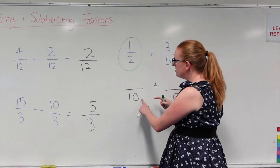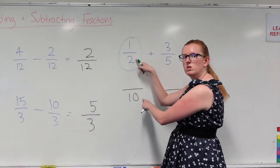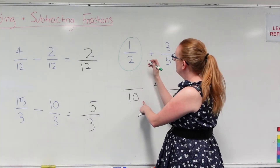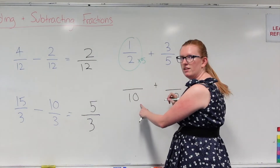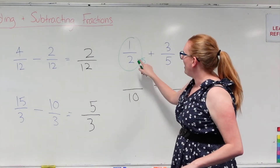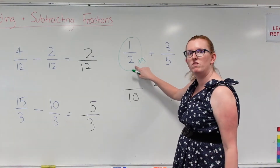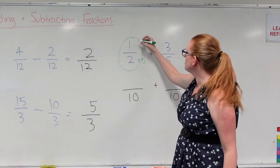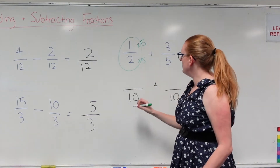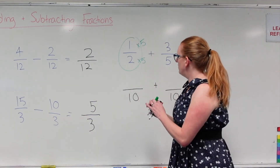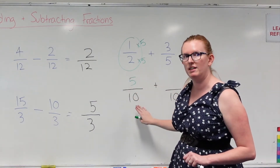What do I have to do to a 2 to turn it into a 10? What do I have to multiply it by? 2 times 5 gives me 10. So what I do to the bottom I have to do to the top. So if I'm multiplying the bottom by 5, I have to multiply the top by 5 as well. So 1 times 5 is 5. So my new equivalent fraction is 5 over 10.